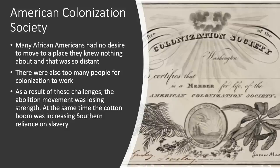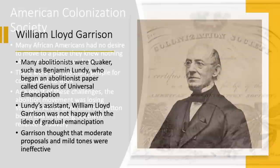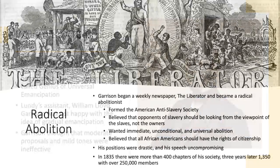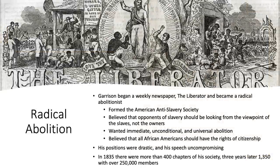At the same time, the cotton boom was increasing Southern reliance on slavery. Many who led the movement came from the Quaker faith, including Benjamin Lundy, who began an abolitionist paper called Genius of Universal Emancipation. Lundy believed in gradual emancipation, but his assistant William Lloyd Garrison was not happy with such a plan. Garrison hated slavery and thought that moderate proposals and mild tones were ineffective. Eventually Garrison left Lundy, returned to Boston, began his weekly newspaper The Liberator, and formed the American Anti-Slavery Society.